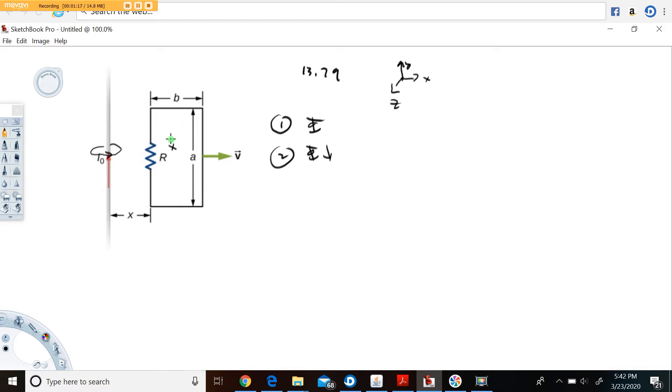So, in order to calculate the current here, the current can be calculated as e over r, and that's just Ohm's law, voltage equals current times resistance, where this e is going to be the induced emf in the loop.